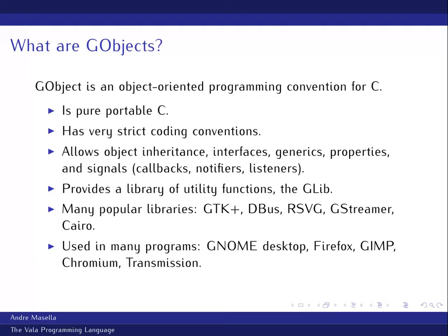GObject also gives you a huge set of utility functions called GLib, which is really kind of what the C standard library should be. You get a string builder, and you know, the stuff that you always wonder about — like why don't I have a decent hash table in C? I don't want to have to write one from scratch.